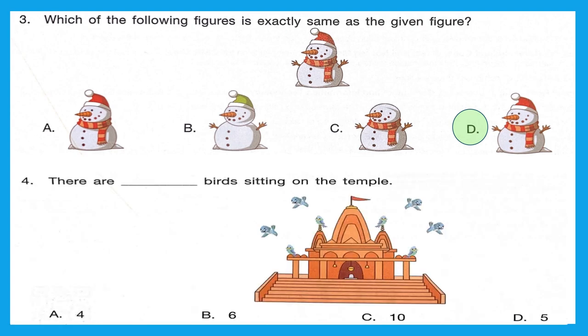Question 4: there are dash birds sitting on the temple. It's a tricky question because there are a lot of birds we can see, but we have to count only the ones sitting on the temple, not flying over it. We can see 1, 2, 3, and 4 — four birds are sitting on the temple. So option A is correct.